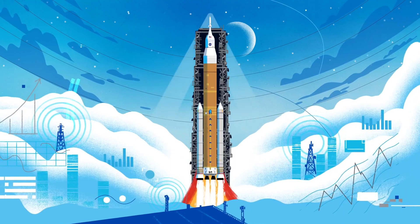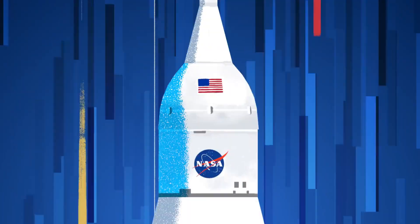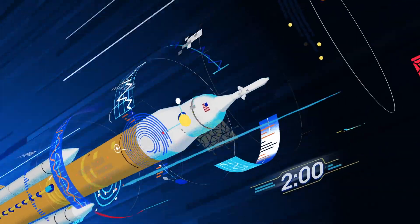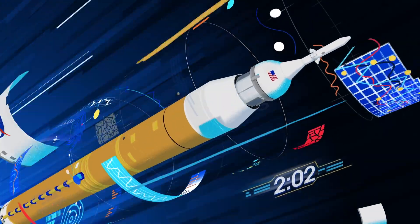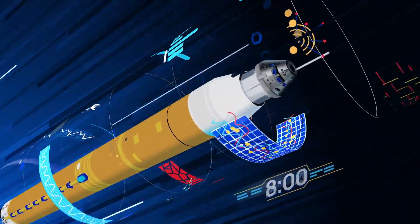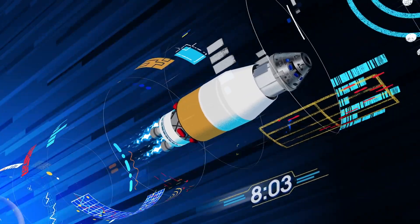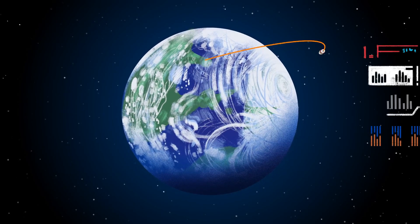All four RS-25 engines and the two solid rocket boosters come to life thundering our crew upwards. Two minutes after ignition, the solid rocket boosters are spent and released. Eight minutes after launch, the core stage is depleted and separated. The upper stage fires briefly, placing Orion into a parking orbit around the Earth.